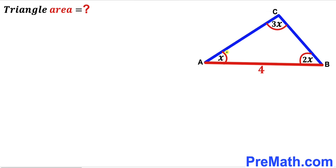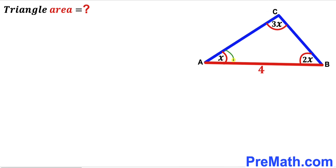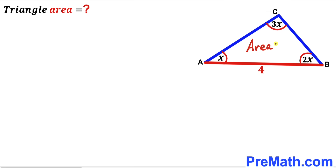Welcome to pre-math. In this video we have got triangle ABC, as you can see in this given diagram, such that angle BAC is represented by x, angle ABC is 2x, angle ACB is 3x, and side AB has a length of 4 units. Our task is to calculate the area of this triangle ABC.